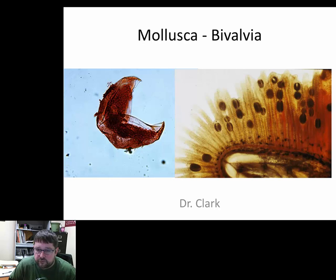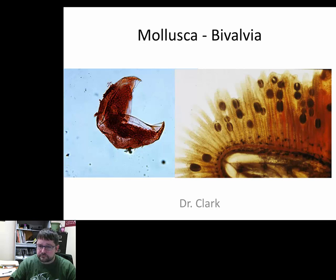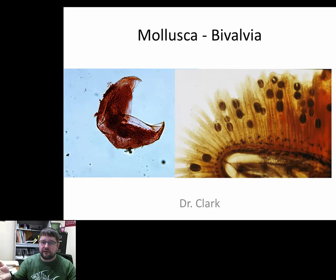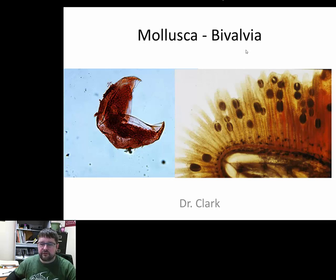Dr. Clark here again. Today for animal biology we're going to talk about Mollusca — in particular, Bivalvia. So we're talking about the phylum Mollusca and the class Bivalves. Last time we talked about Gastropoda, and now we're going to move into a different structure that is nonetheless very successful. Bivalves are very successful — again, like Gastropoda, there are over 30,000 species, so very species-rich, and they've been around for a very long time.